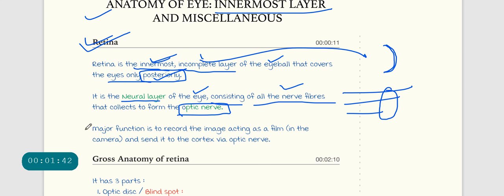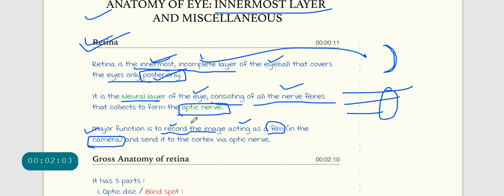The major function of the retina is to record the images and actions and present them as a film. Basically, the eye is a camera, and the retina is the recorder producing this film. The eye acts as a camera, but the recorder is the retina.